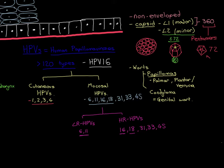To build the capsid, you take 360 L1 molecules, pentamerise them together, assemble them into the surface of a sphere, and onto some of them you insert L2 proteins. Most human papillomavirus particles will not have 72 L2 proteins — you'll have much fewer, so only some pentamers on the capsid will carry an L2 protein.